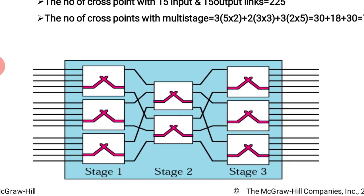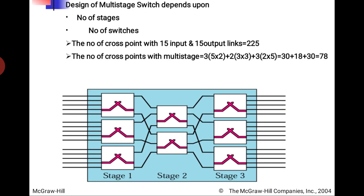At the first stage we use three switches, at stage two we use two switches, and at stage three we use three switches again. So in this three-stage configuration, connections can be routed through different intermediate switches.